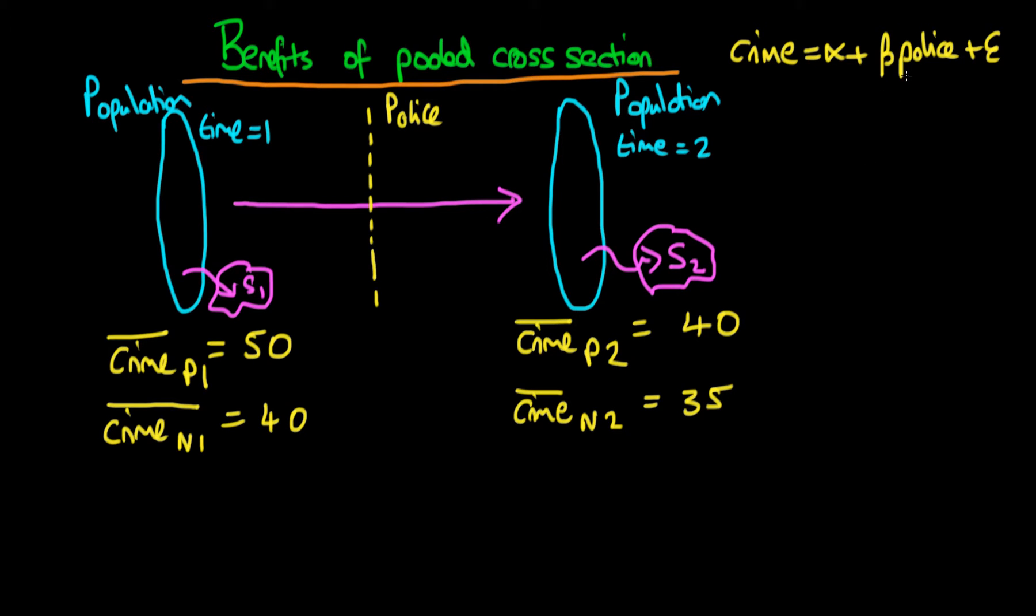The problem we were interested in solving was whether or not a particular policing policy actually decreased crime in those cities which introduced it. So the idea is that after that policy was instituted, we might take a sample of cities from the population. And if we were to estimate the OLS model on that particular sample,